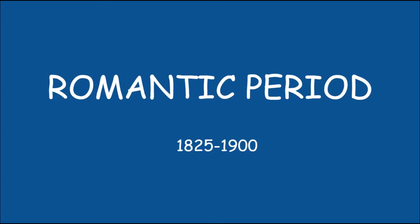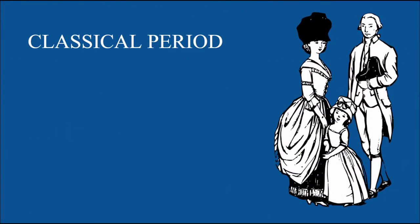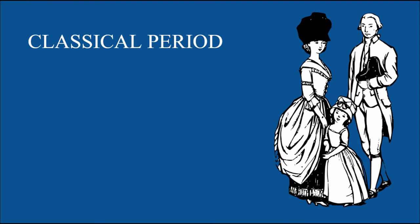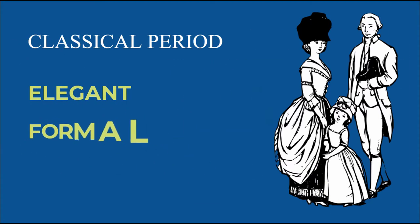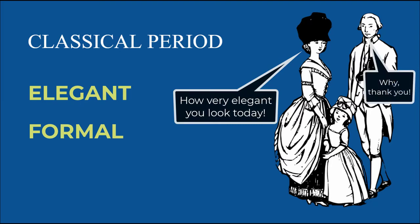Welcome to the romantic period. The romantic movement occurred roughly between 1825 and 1900. Now remember the classical period of music? We learned that the music was elegant and formal, but by the beginning of the 19th century music was evolving into a new style.